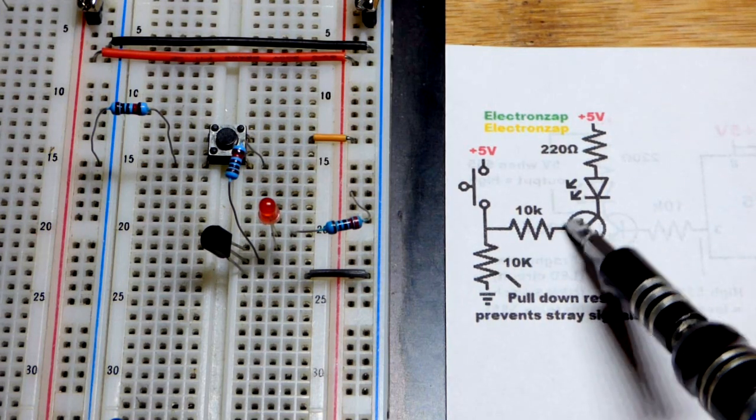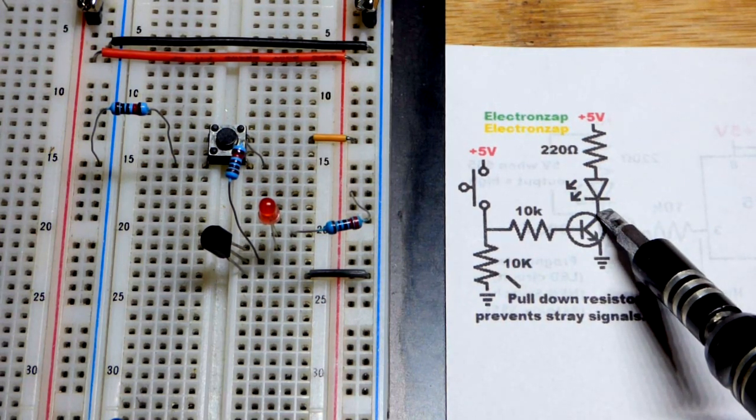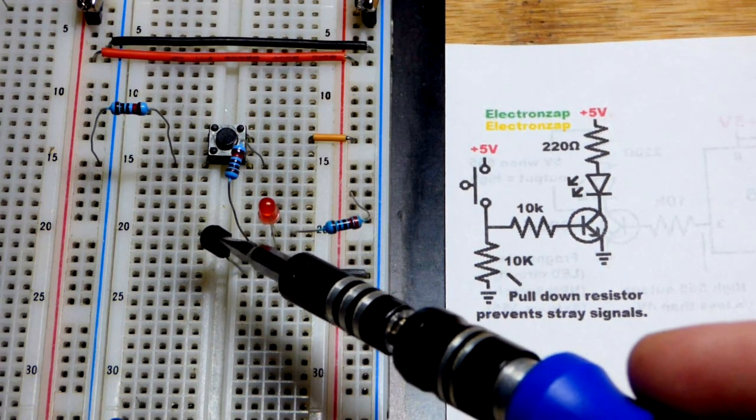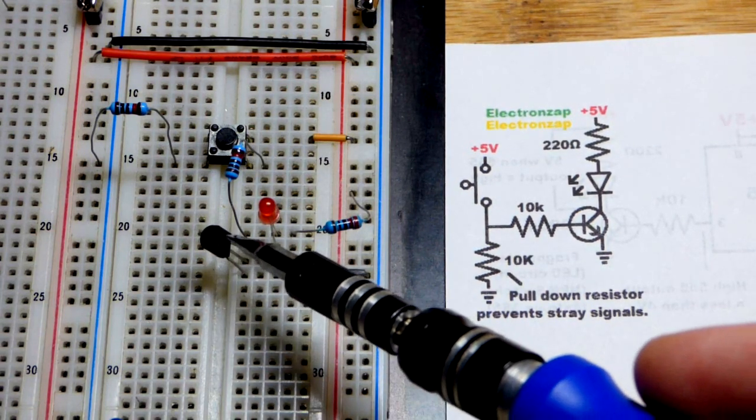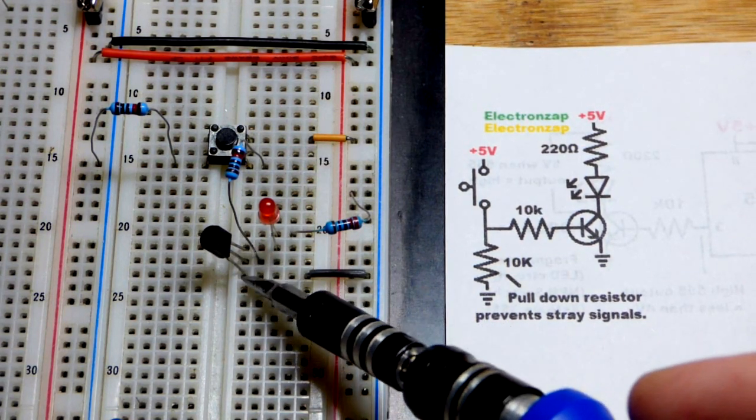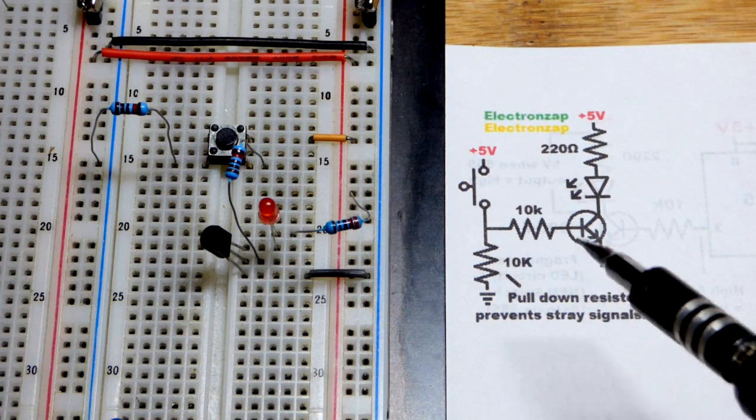So that's the emitter for the schematic, the base, and then the collector right there. For the 2N3904 and any other bipolar junction transistor that starts with 2N, with the flat side right here, we've got the emitter at the bottom, base in the middle, collector on top.